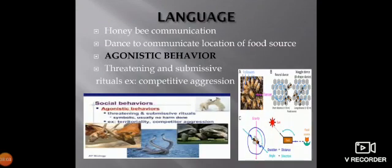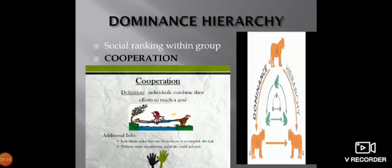Honeybee communication involves a dance to communicate the location of a food source. Agonistic behavior consists of threatening and submissive rituals. An example is competitive aggression.